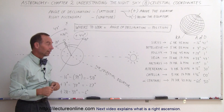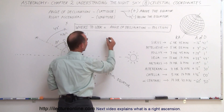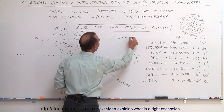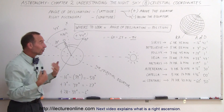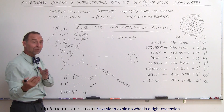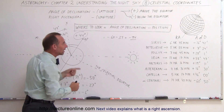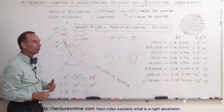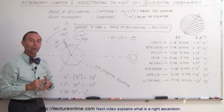How about Alpha Centauri? It's at minus 60 degrees. Applying the equation: minus 60 minus 34 equals minus 94 degrees. That's more than 90 degrees — it's past the horizon. From near Los Angeles, there's no way to see Alpha Centauri. I'd have to travel south, toward southern Mexico, South America, or the Panama Canal area, before I could see Alpha Centauri.